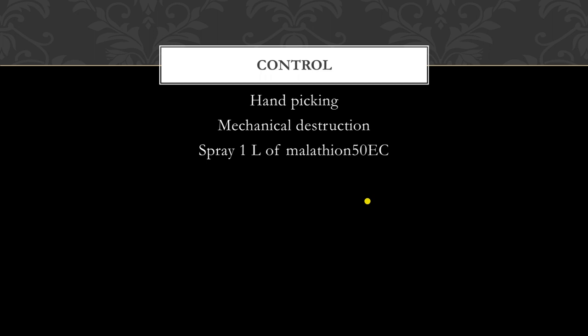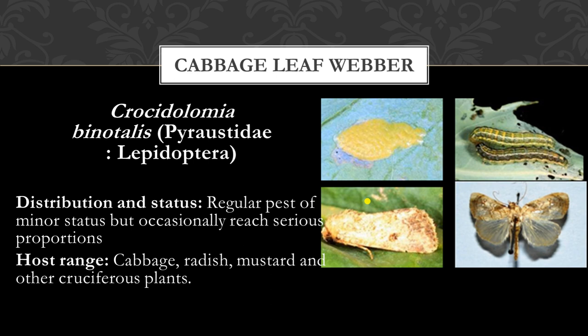The next insect is the cabbage leaf webber. The larvae of this insect web the cabbage leaves together with silk and cause damage. Its scientific name is Crocidolomia binotalis, order Lepidoptera, family Pyraustidae. This insect is found wherever cruciferous crops are cultivated worldwide. Besides cabbage, it also attacks radish, mustard, cauliflower, broccoli, and other crops.